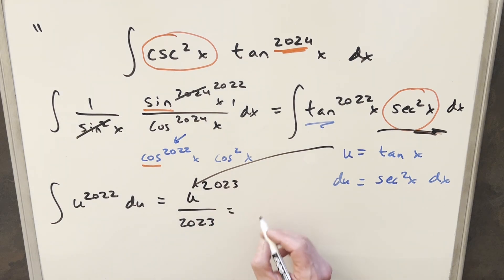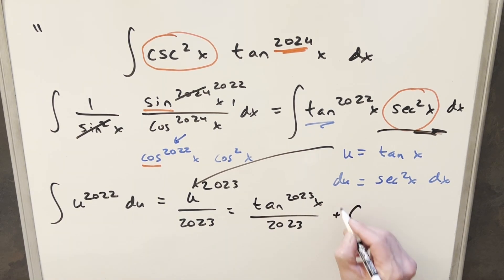Back substitute here. And so we just get our final solution of tan 2023 x over 2023. Put a plus c on there, and that's it.